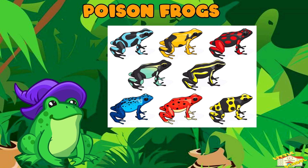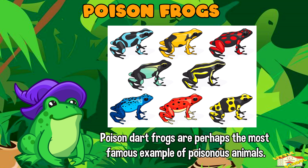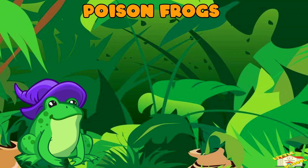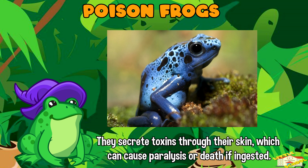Poison frogs: poison dart frogs, found in Central and South America, are perhaps the most famous example of poisonous animals. They secrete toxins through their skin, which can cause paralysis or death if ingested.